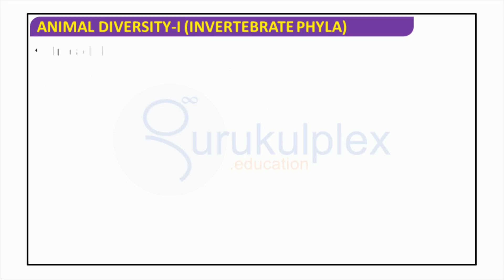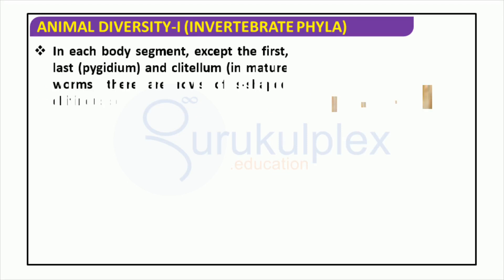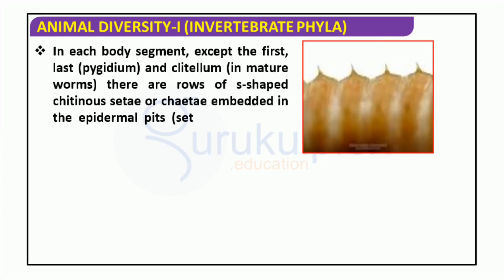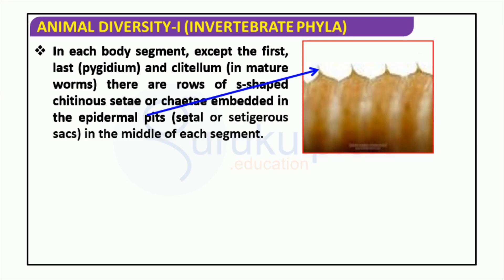Setae are small, chitinous appendages found in body segments of many invertebrates, barring the first, last, and clitellum in mature worms. They can be either protrusible or retractable and serve an essential role in locomotion. Their presence is essential to animal diversity and provides insight into how invertebrates move in their living space.